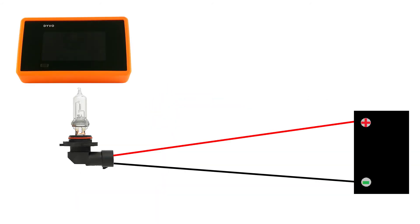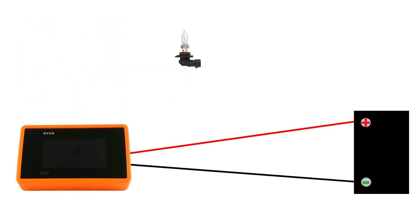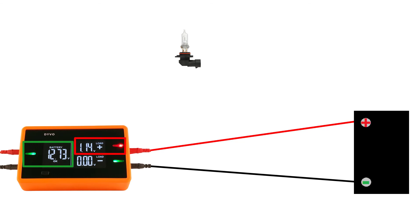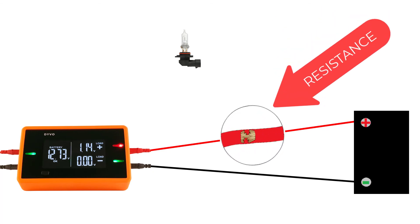Here we have a light bulb that doesn't turn on. We'll remove the light bulb and put DEVO in its place, acting as a known good component. We can see the battery voltage is 12.73, but our positive LED is red and we're only getting 1.14 volts to our component. This is because we have high resistance in the circuit. The resistance causes a voltage drop from 12.73 at the battery to 1.14 at the component.